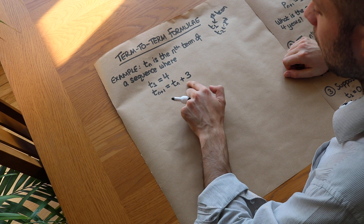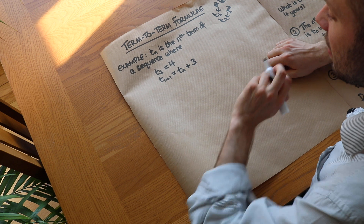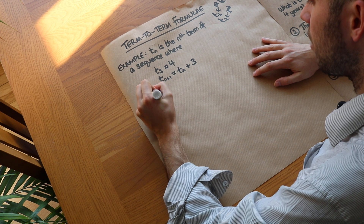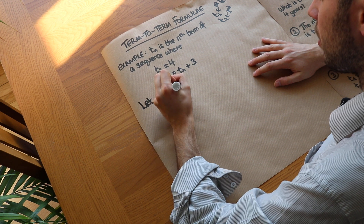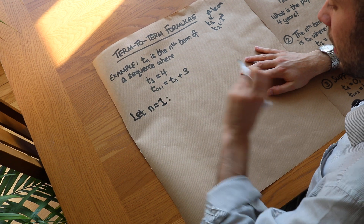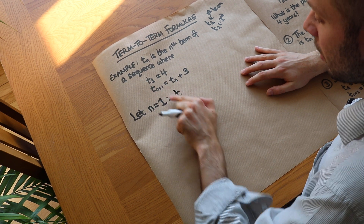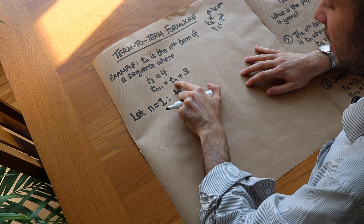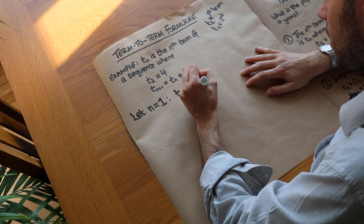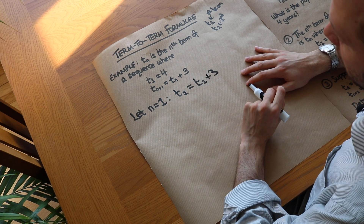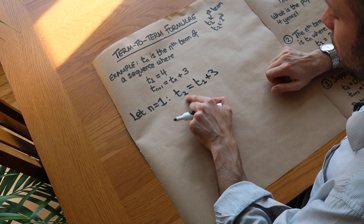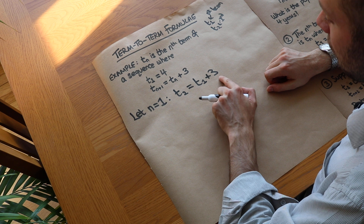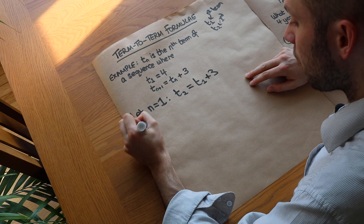We've also got this more confusing rule which says tn+1 is equal to tn plus three. It's easiest to understand if we let n be a particular number. If we let n equal to one, then substituting in: n+1 is two, so we get t2 is equal to t1 plus three. In words, that says the second term of the sequence is equal to the first term plus three.